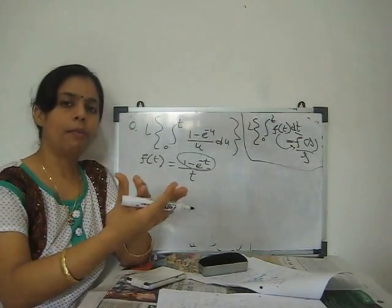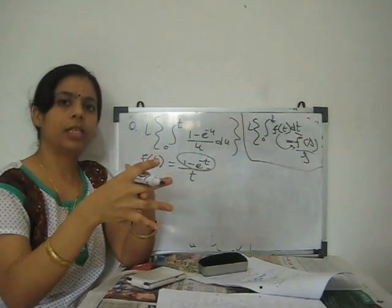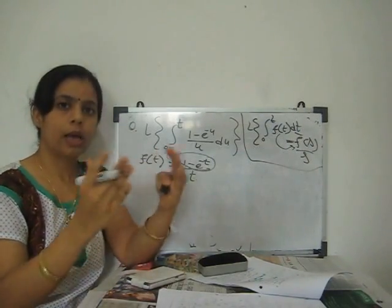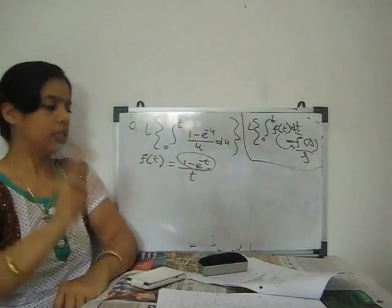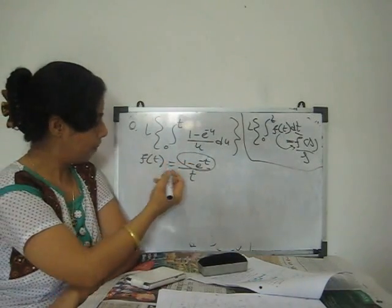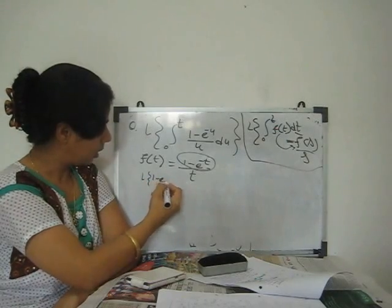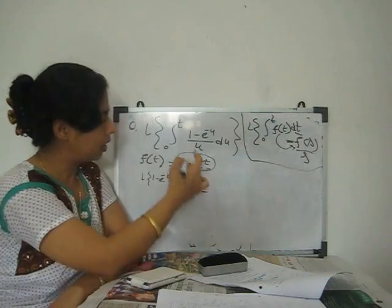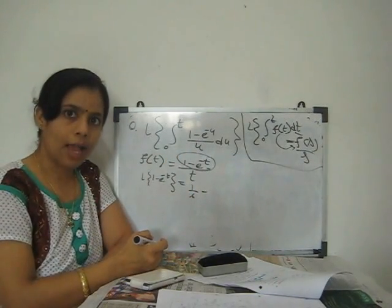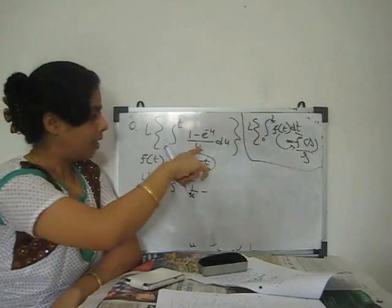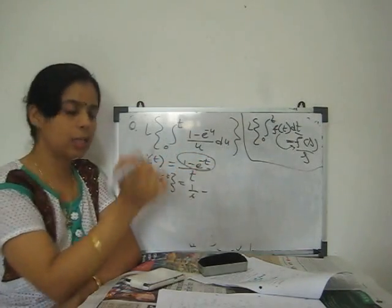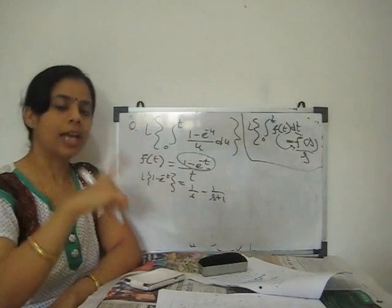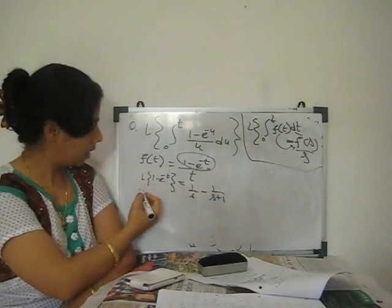Note that there is also a division-by-t property involved here. When solving Laplace problems, multiple properties — first shifting, division by t, multiplication by t — often merge with each other; you must decide step by step. First, L{1 − e^(−t)} = 1/s − 1/(s+1), since a = −1 gives 1/(s+1).